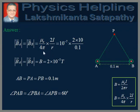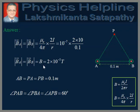Putting the values: mu-zero over 4 pi equals 10 to the power minus 7, 2 into I equals 10, divided by R equals 0.1. Simplifying, we get BA equals BB equals 2 into 10 to the power minus 5 Tesla. Since both magnitudes are equal, we denote them as B, so B equals 2 into 10 to the power minus 5 Tesla.